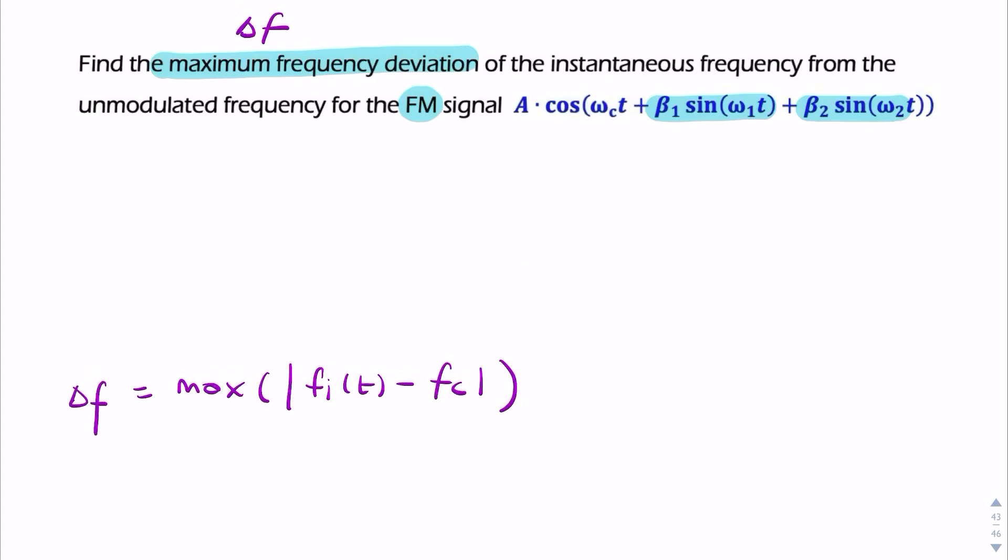So, what we need to find is the instantaneous frequency. So we can subtract the carrier frequency and find delta f. Let's start in radians per second by saying the instantaneous frequency is the derivative of the instantaneous phase. So it's the derivative of that, the bit between the brackets, the argument for the cosine.